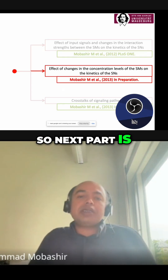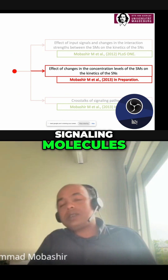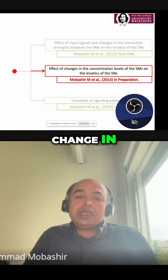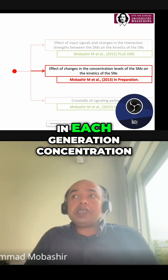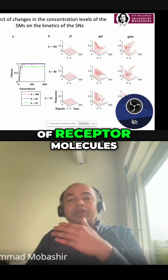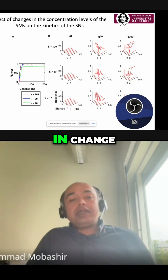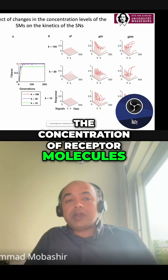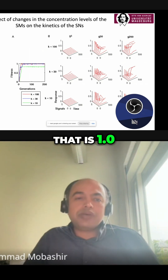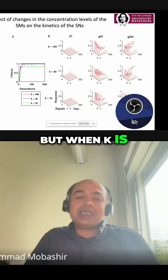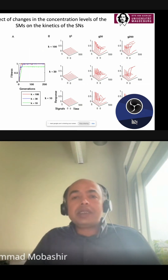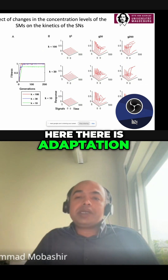The next part covers the effect of changes in concentration levels of signaling molecules. Here, the change in concentration of the input signal is shown, followed by the change in concentration of receptor molecules. When the concentration of receptor molecules is changed, the system immediately tries to reach the maximum fitness value of 1.0 for the two stronger values. When k is less than 10, it is not exactly maximum but close to 0.9. So we can see adaptation in output response.